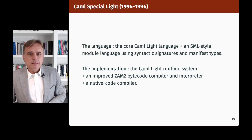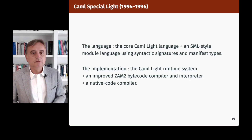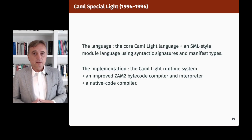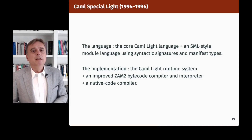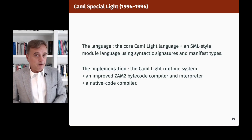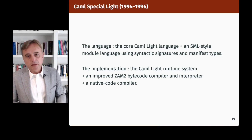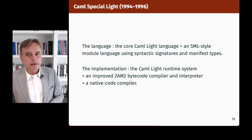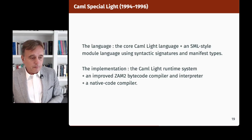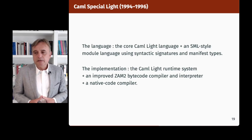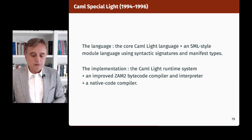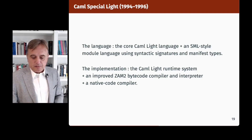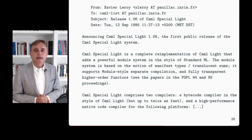Eventually that led me to start the Caml Special Light project — a language and implementation. The language was the core Caml-like language plus an implementation of this new approach to Standard ML modules using syntactic signatures and manifest types. The implementation reused much of the Caml Light runtime system, including an improved abstract machine, the ZAM2 bytecode compiler and interpreter, but also for the first time a native code compiler. That came out of some earlier experiments on type-directed unboxed data representations — I had to do native code compilation because with bytecode you can't really evaluate the impact of unboxing. It was publicly released in September 1995.